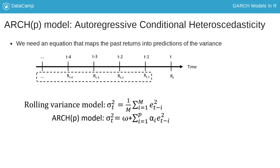This leads to the ARCH equation in which the predicted variance equals a constant omega plus a weighted sum of the p most recently observed squared prediction errors.